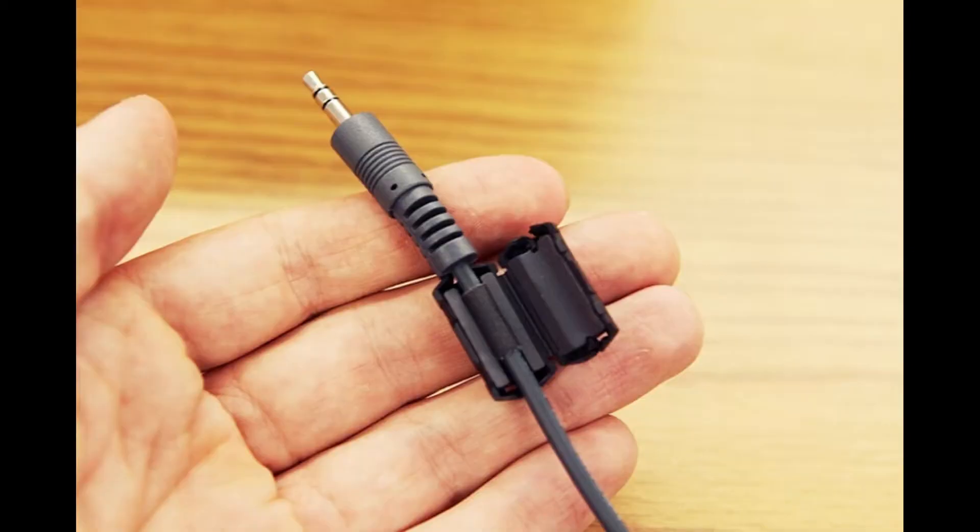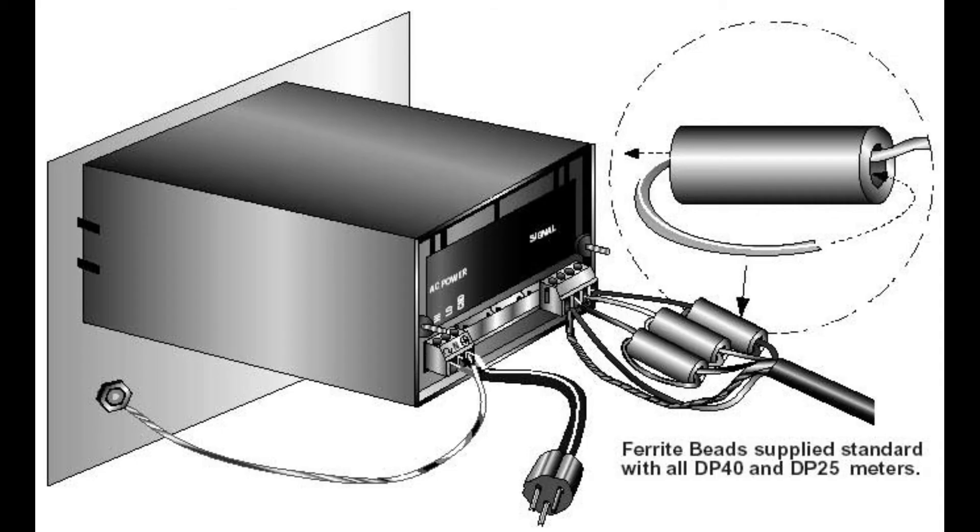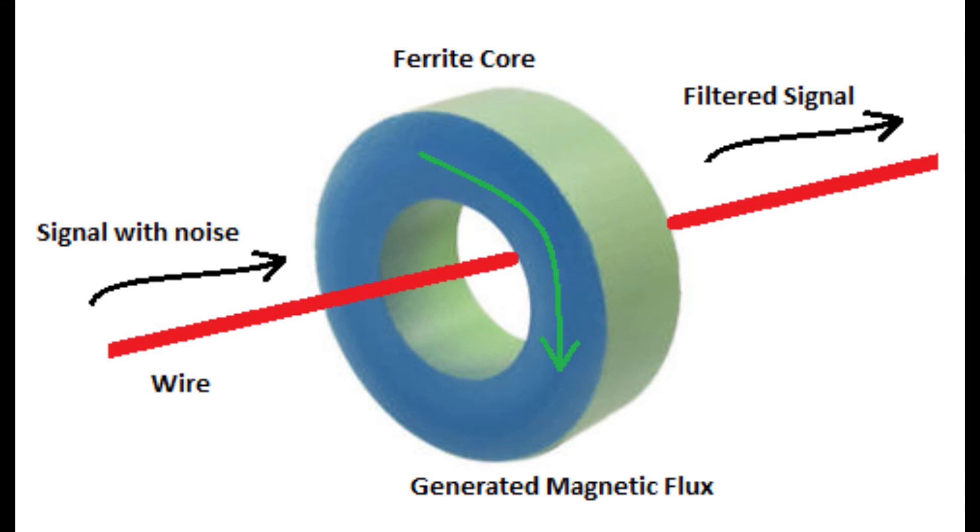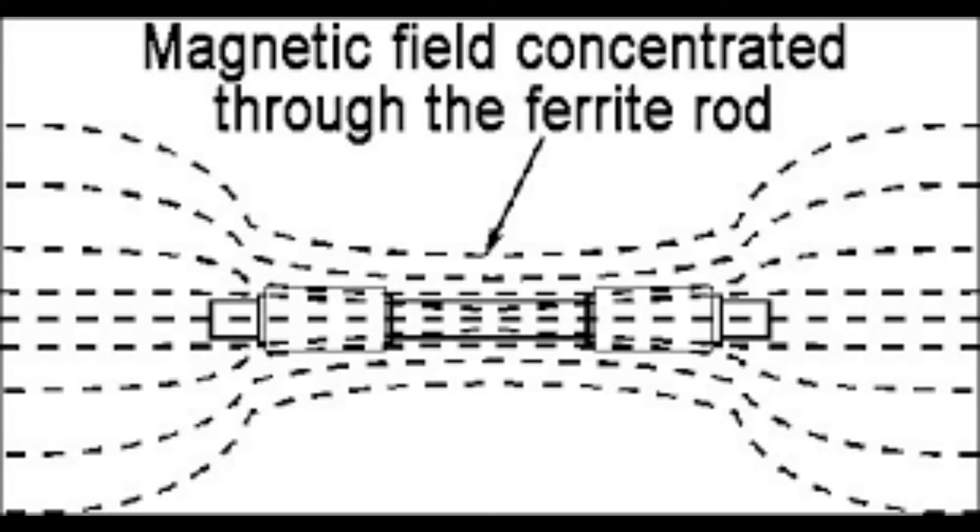This ferrite bead is snapped on charging cords to minimize the effect of external magnetic fields. These beads act like an inductor hence minimize the interference with the current passing through the charging cord. Use of these beads is even more important on medical devices to get correct results of the test.